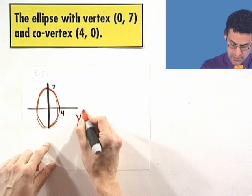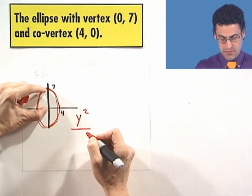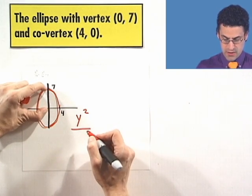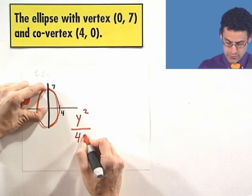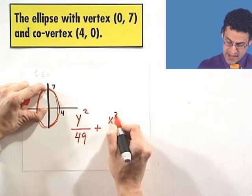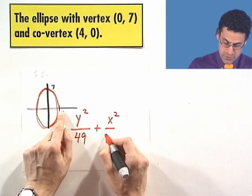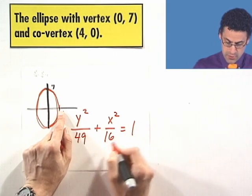So I write y squared divided by the square of that length right there, which is going to be 7 squared, or 49, plus now I put the x squared, since that's sort of more modest. I see this length is 4, so I square it and get 16, equals 1. And that's the answer.